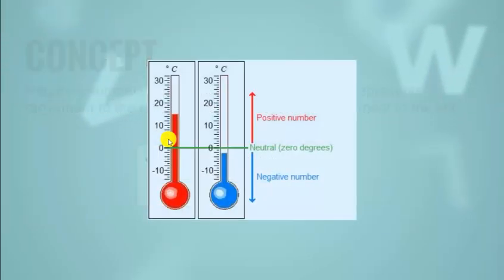Let's move forward. Here you can see another example. We are having two thermometers — one is showing blue mercury and the other is showing red mercury. The main purpose is to learn how to count numbers and see where numbers are positive and where they are negative. Just keep one thing in mind: number 0 will always be neutral — it is 0 degrees here on the thermometer.